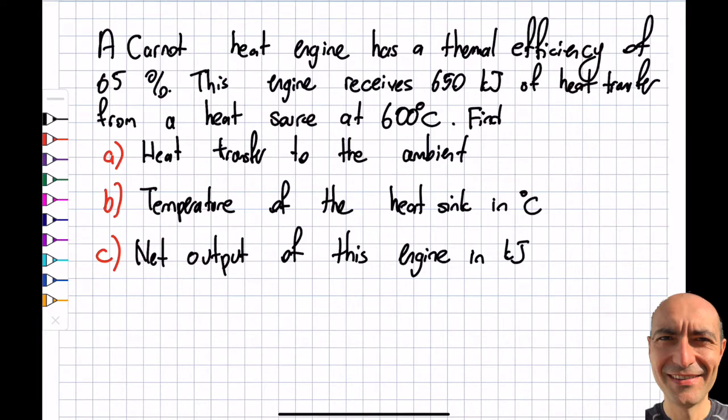Here is the problem: A Carnot heat engine has a thermal efficiency of 65%, so it's a reversible engine. The efficiency is 0.65. This engine receives 650 kilojoules of heat transfer from a heat source at 600 Celsius.